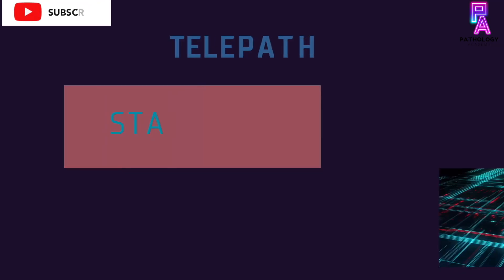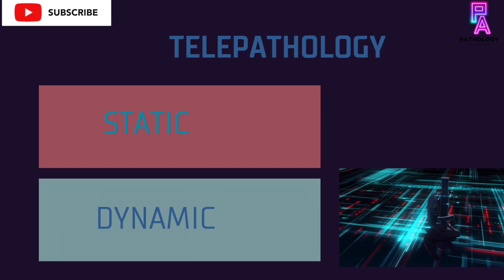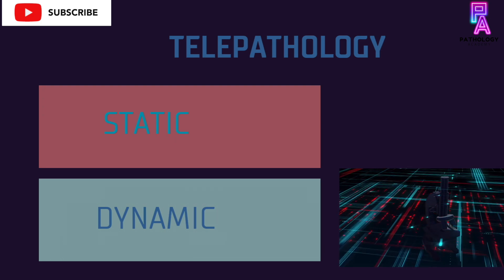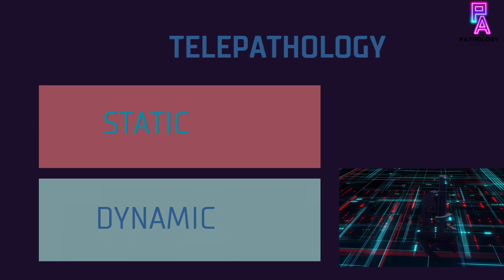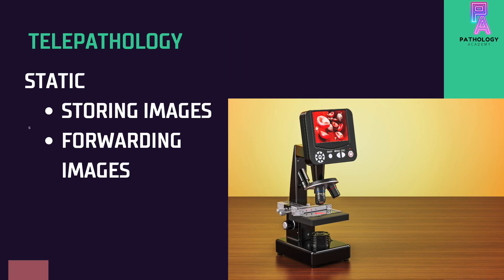Telepathology is of two main types: static and dynamic. In static telepathology there is a store-and-forward mechanism. It is cheap and simple, and needs only a standard telephone and internet connection or a broadband connection. A limited number of images are captured and stored in the hard drive or CD-ROM for later transmission.